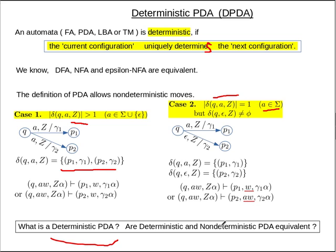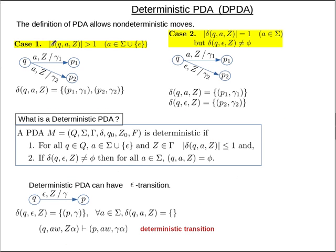A deterministic PDA is a restricted PDA where you cannot have multiple possibilities for the next configuration. By definition, a PDA is at least as powerful as a deterministic PDA. The question is whether a deterministic PDA is as powerful as a general PDA — and the answer is no. We won't go into the full proof as it is beyond the scope of this course, but we will outline why.